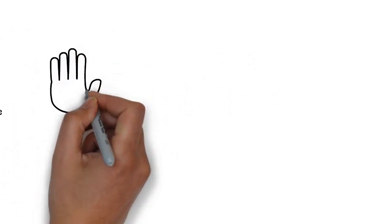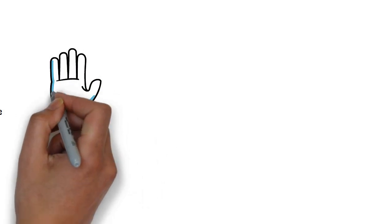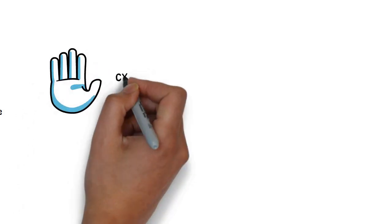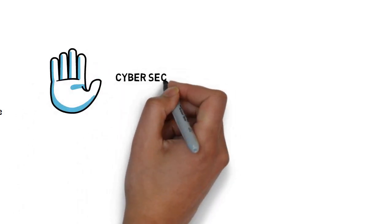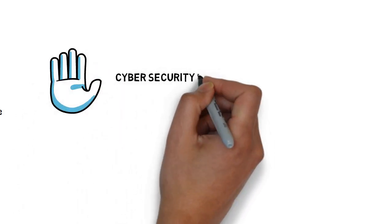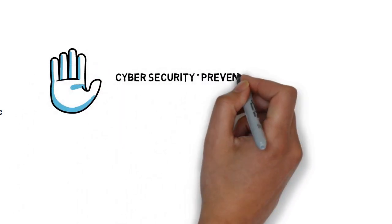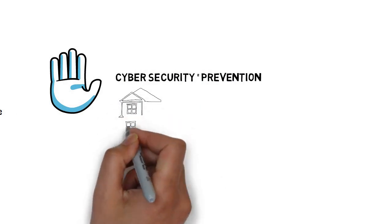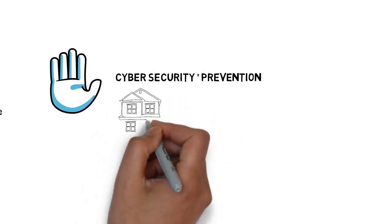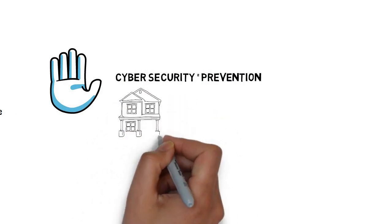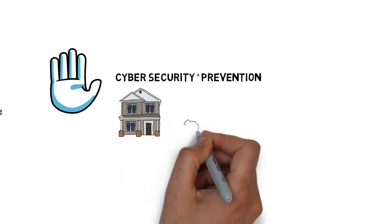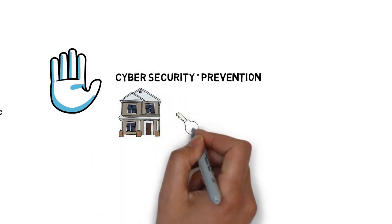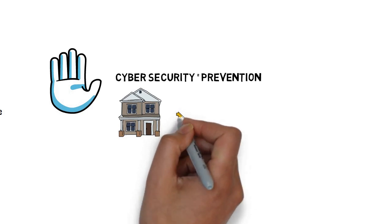Cyber security is about prevention — that is, stopping potential attacks by securing against attack threats. Think of it like securing your house from potential threats like being burgled. You can take a number of steps to ensure your home is secure.